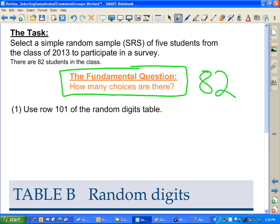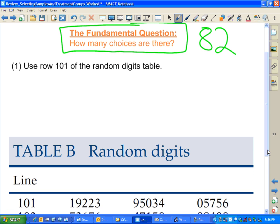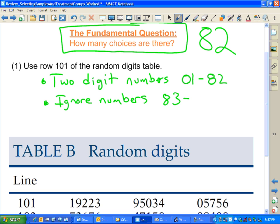Using a random digits table, if there are 82 choices, we're going to need two digit numbers. We need two digit numbers, and we'll select them 01 to 82. We'll ignore numbers from 83 to 99, and we will also ignore duplicates to make sure that the sample only includes five different people.